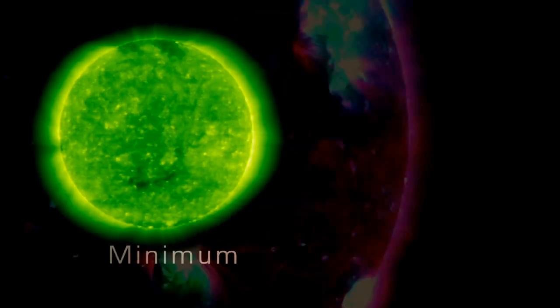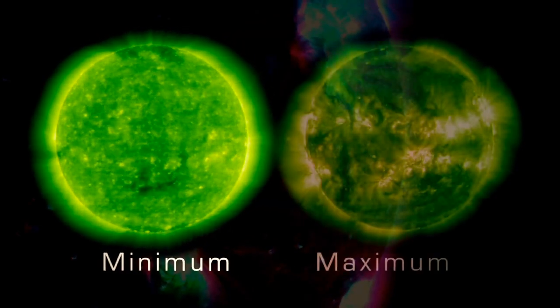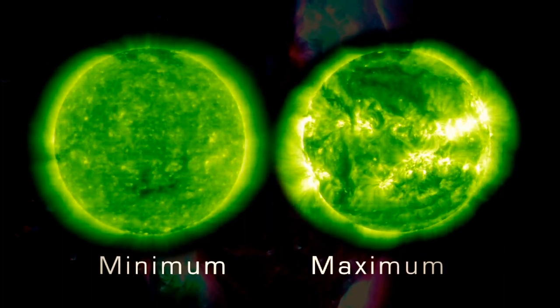During one cycle, the number of sunspots, a good indicator of solar activity, goes from low to high and back down to low. Solar minimum represents a period of time when sunspot numbers are relatively low, and solar maximum represents a period when sunspot numbers are relatively high.